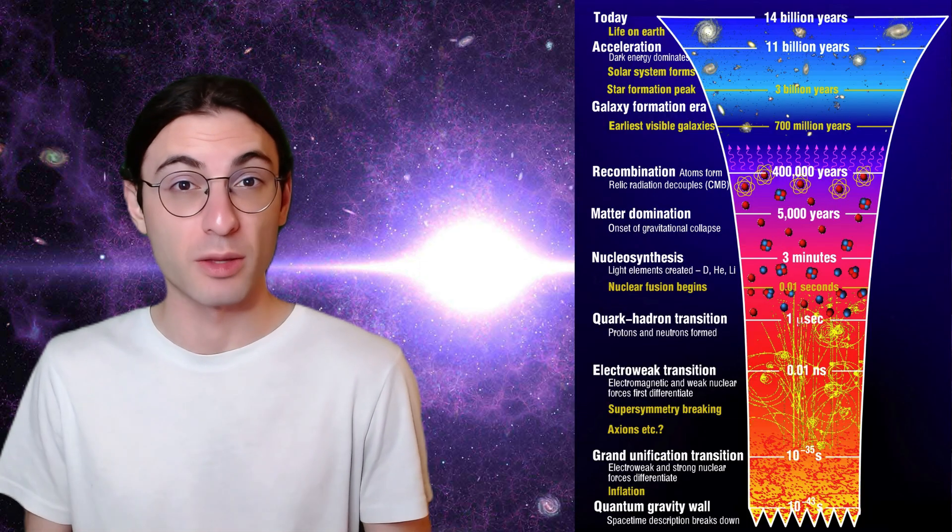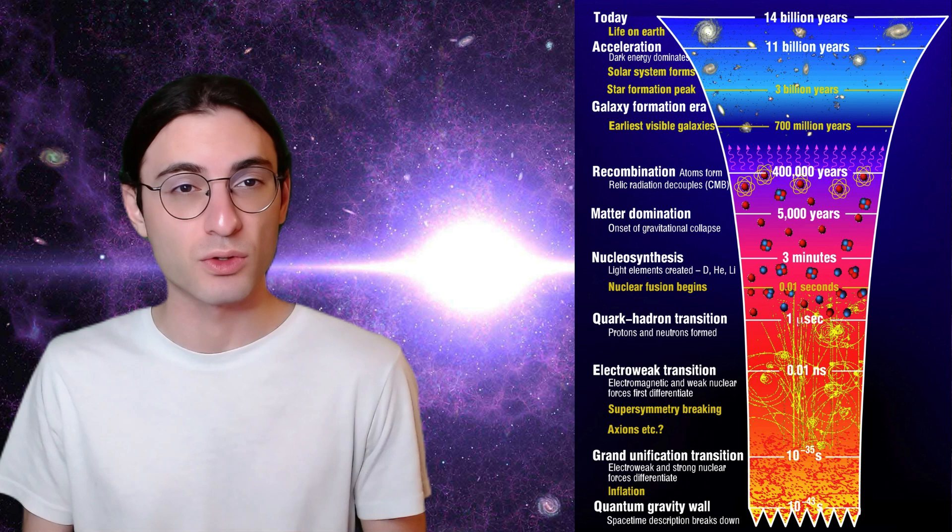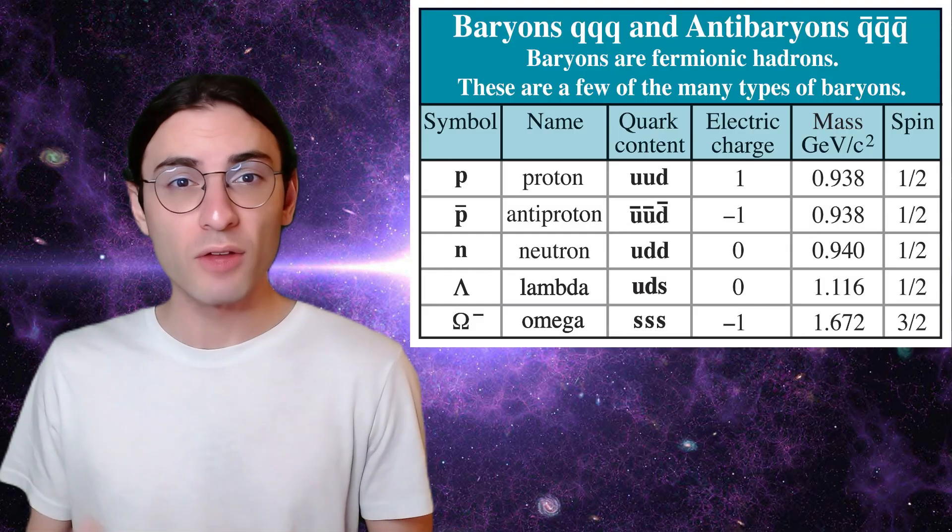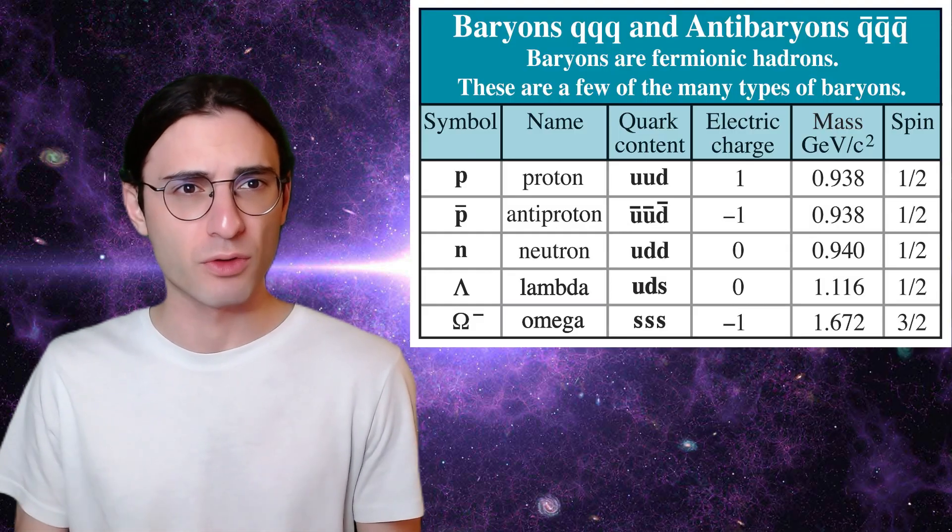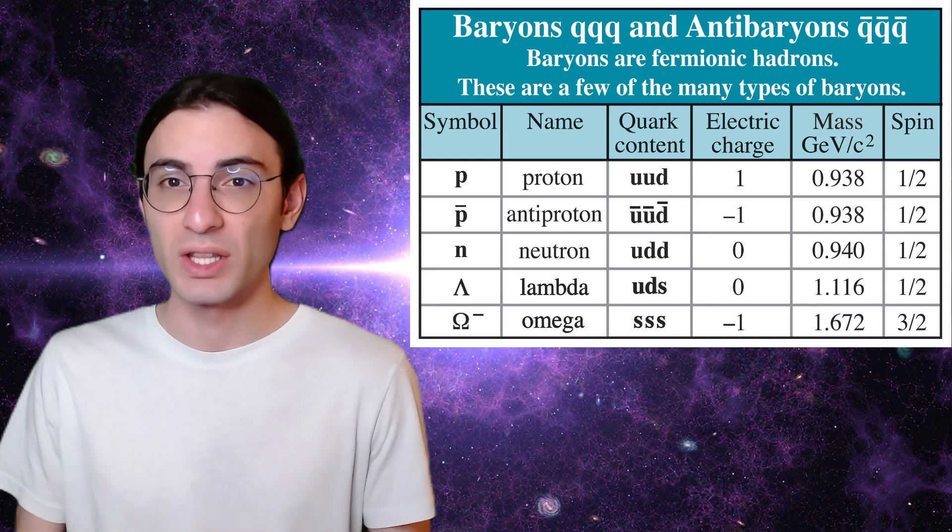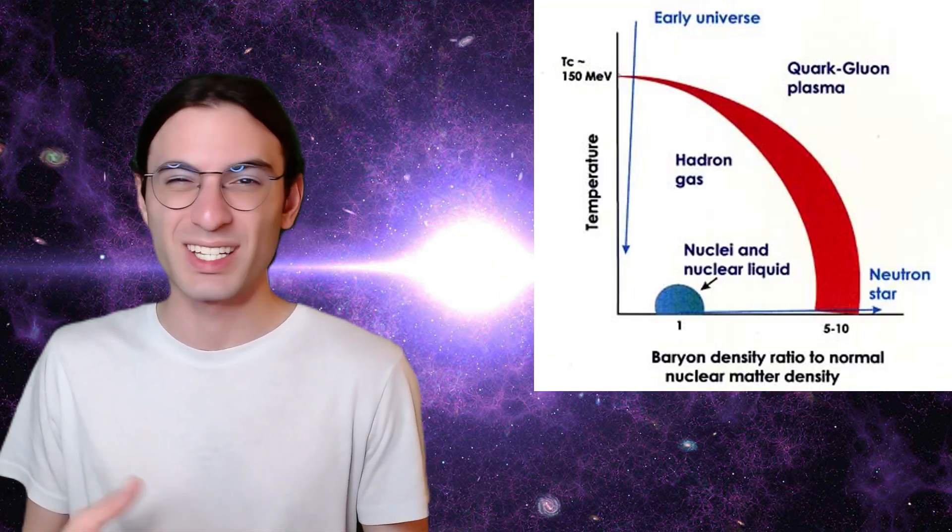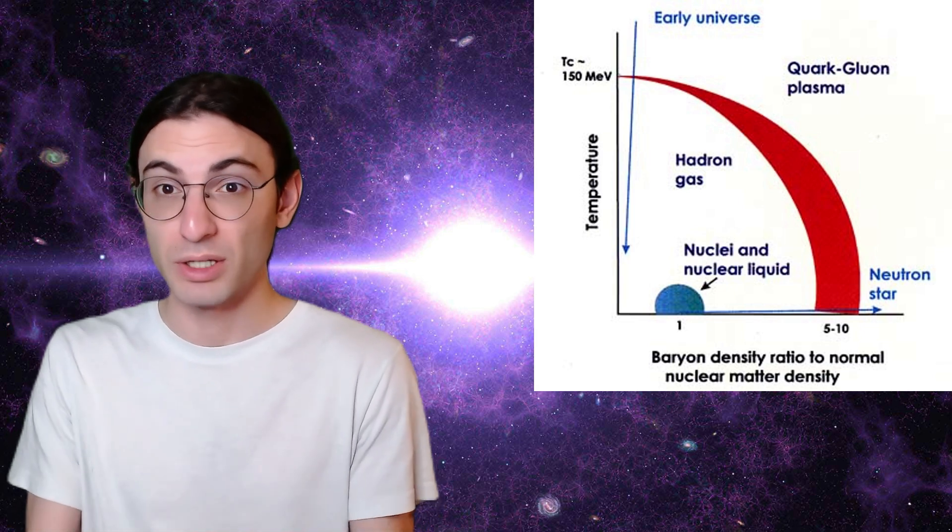About a microsecond after the big bang, the universe was cold enough that protons and neutrons wouldn't melt. Now, of all of the baryons, which are particles composed of three quarks, protons and neutrons are the lightest. Consequently, it was these particles that began to condense out of the quark gluon soup in abundance.